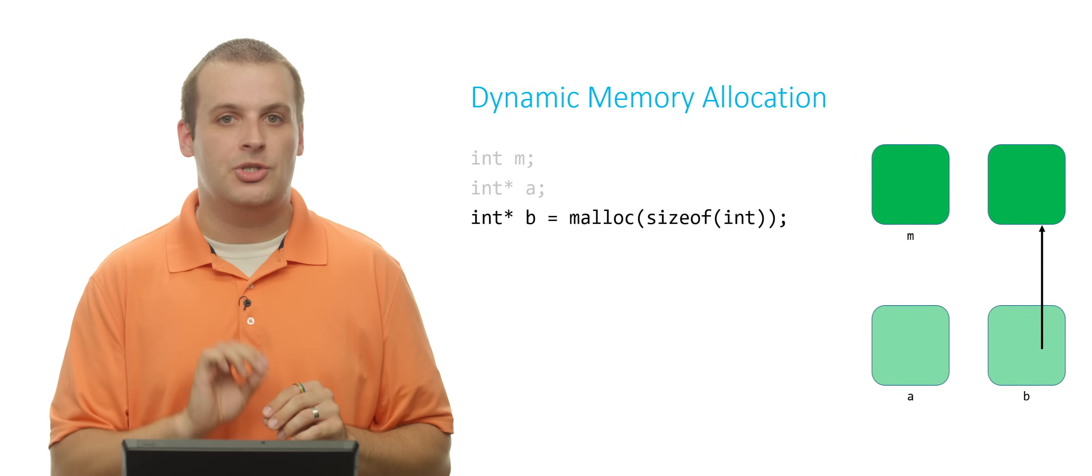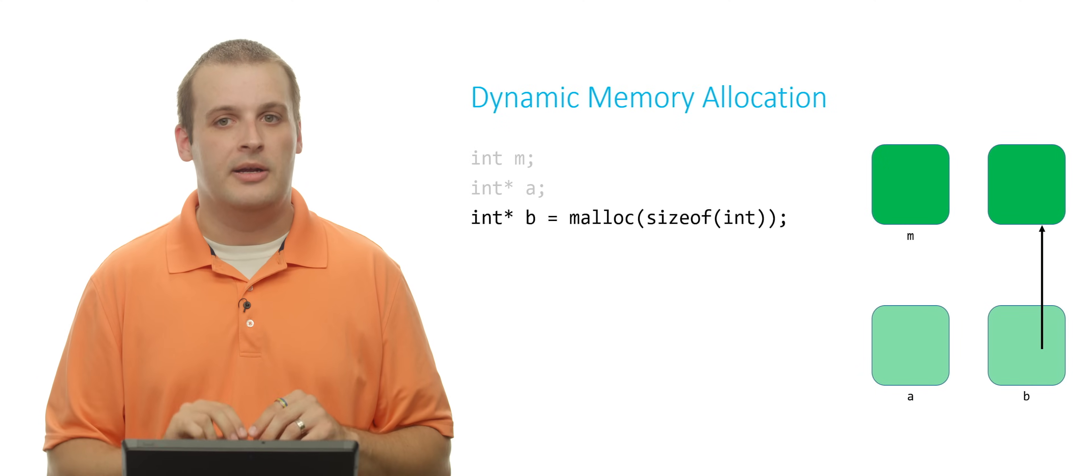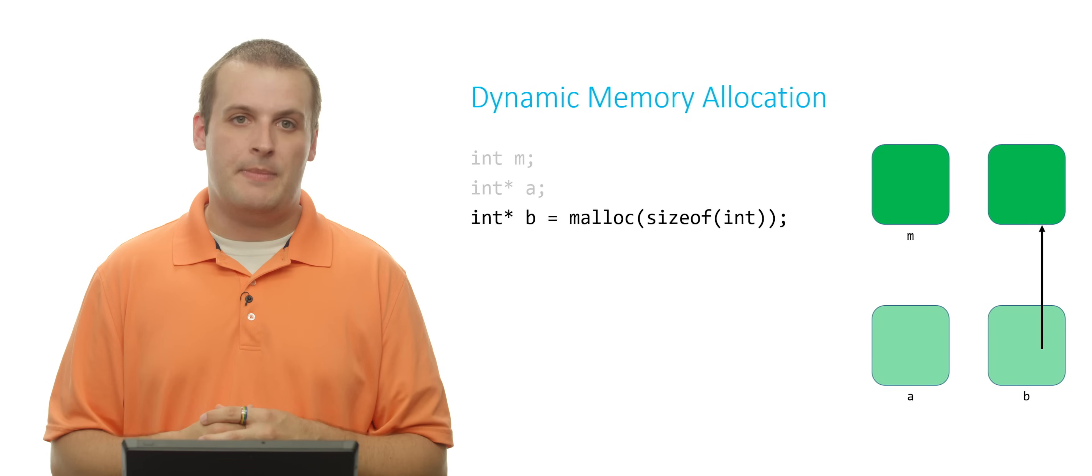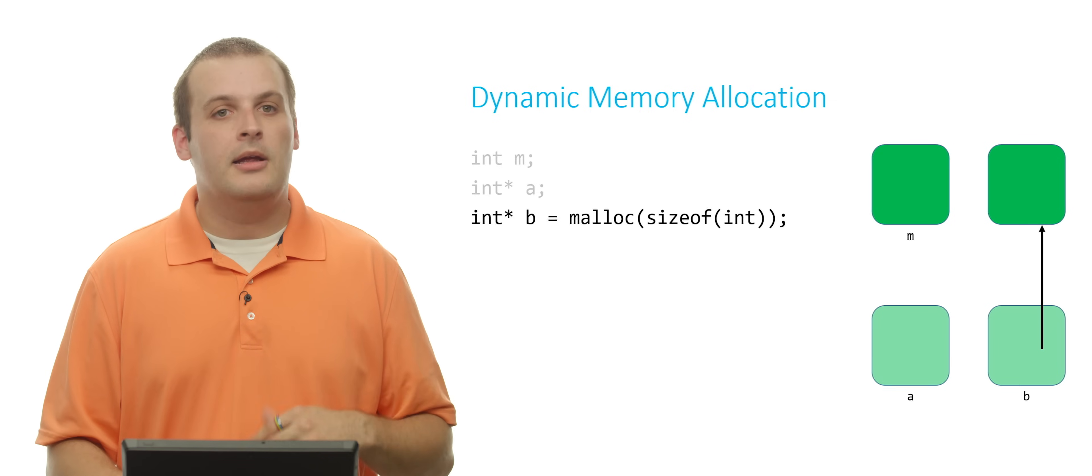And of course, I'm not going to do this here. But the first thing I should do immediately after this is check to make sure that b is not null. If b is null, something has gone wrong. I need to stop my program immediately. Next, I can say something like this, a equals ampersand m.